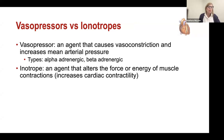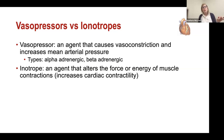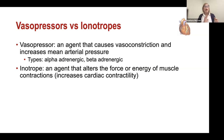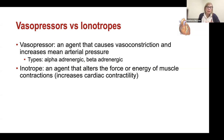Sometimes people use the term vasopressor when they really mean inotrope — it's important to separate those. Vasopressors are primarily alpha stimulants. The artery constricts, the vein constricts — more blood is returned to the right heart, and it's harder for the left heart to eject into the constricted artery. An inotrope is an agent that increases — if it's a positive inotrope — the force or energy of the muscle contraction or cardiac contractility.